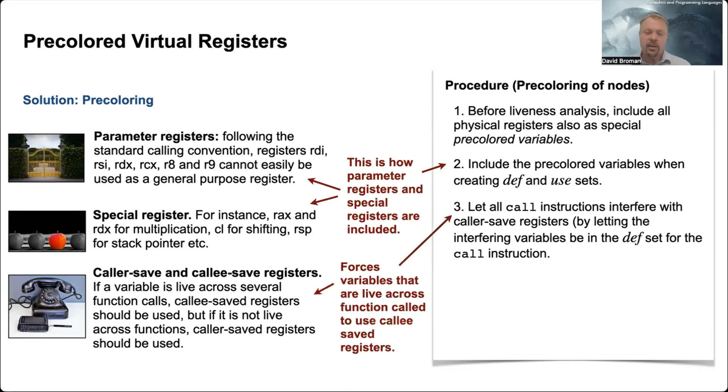By doing that, the register allocator will respect these constraints while doing the register allocation. And before you start, you have to give all the pre-colored nodes unique names. This is why it's called pre-coloring.